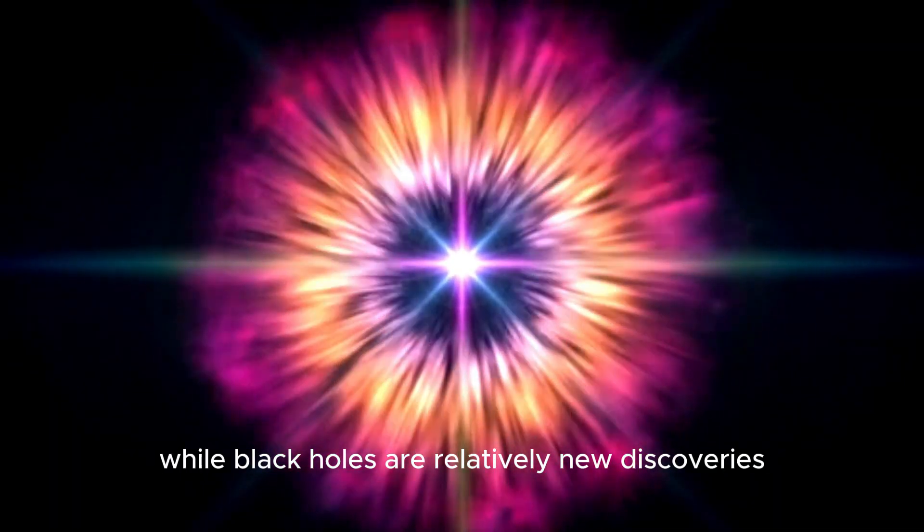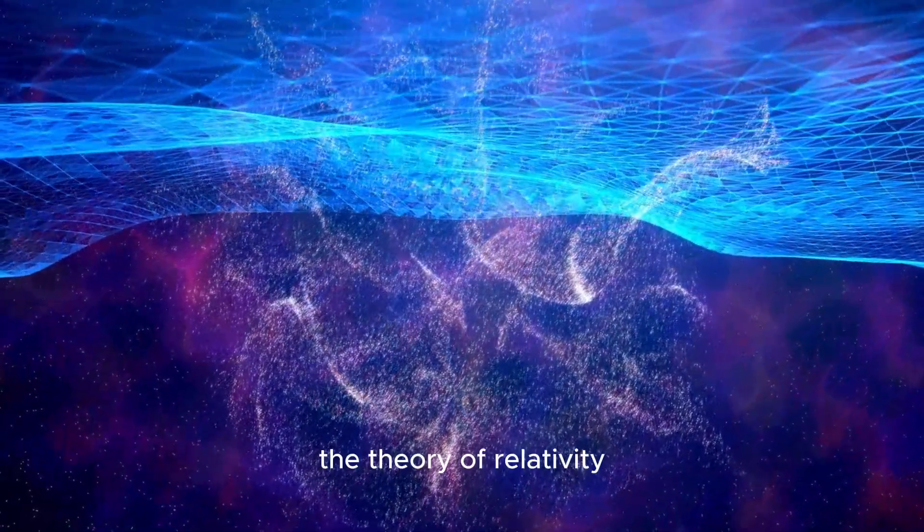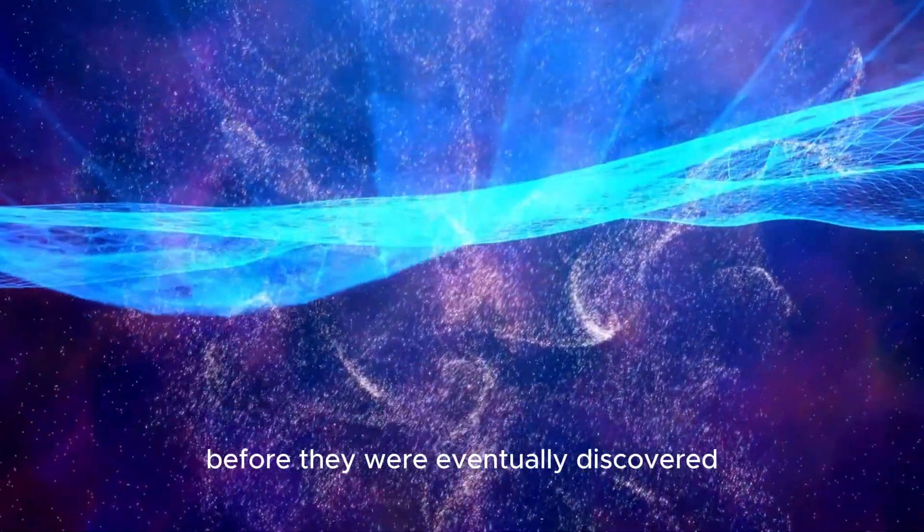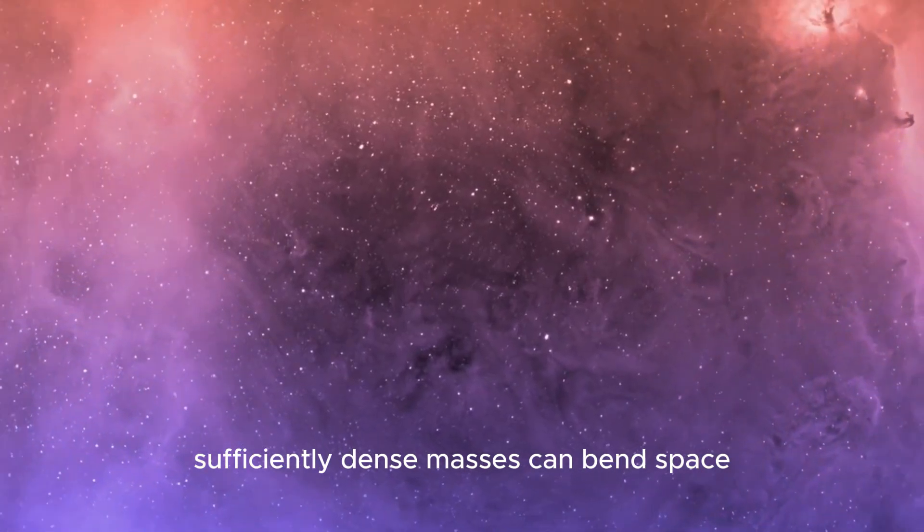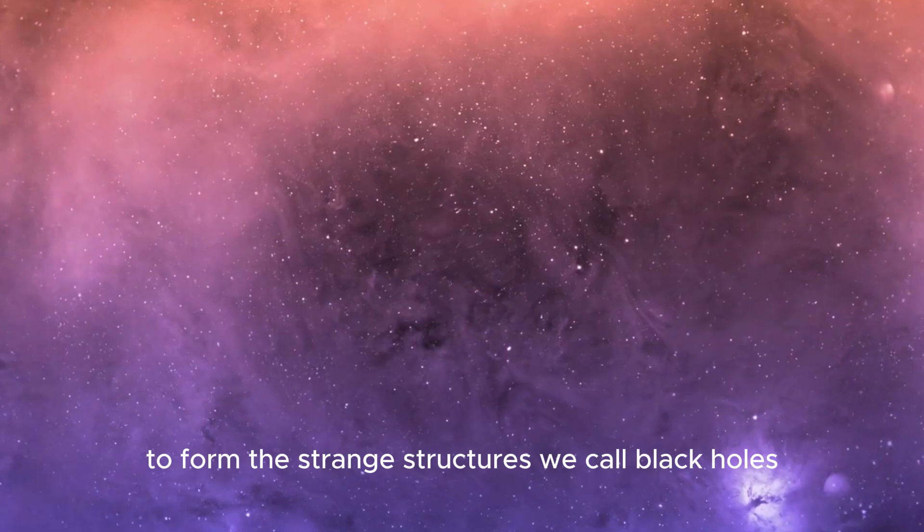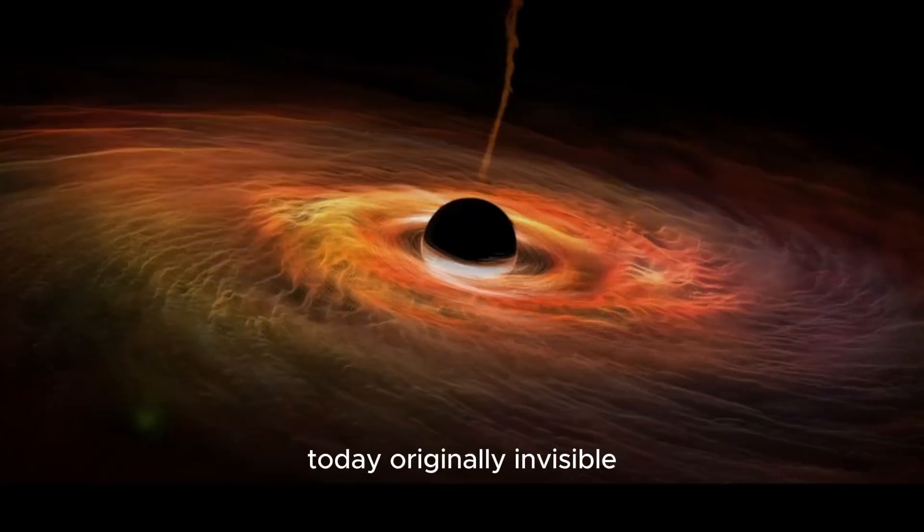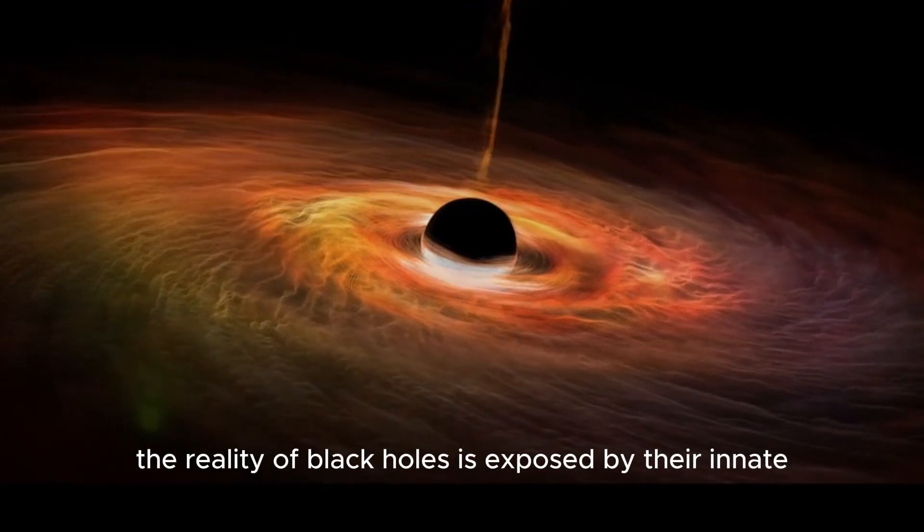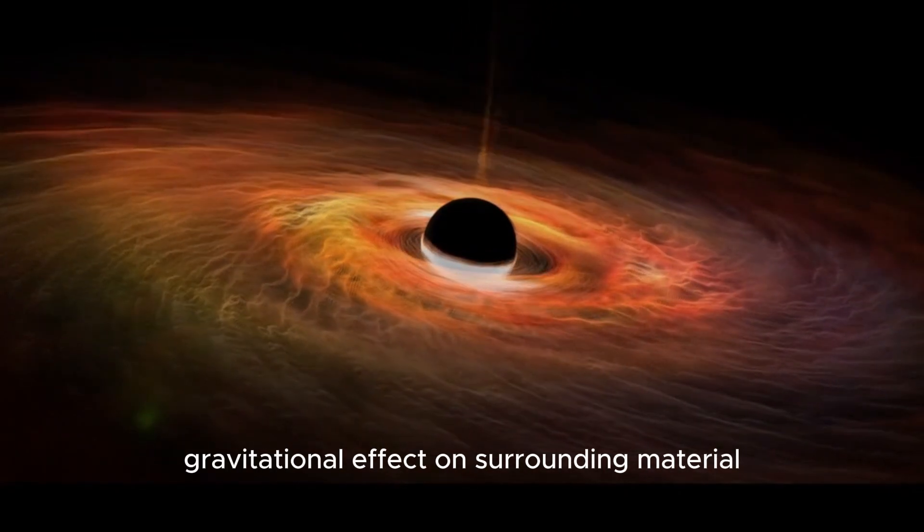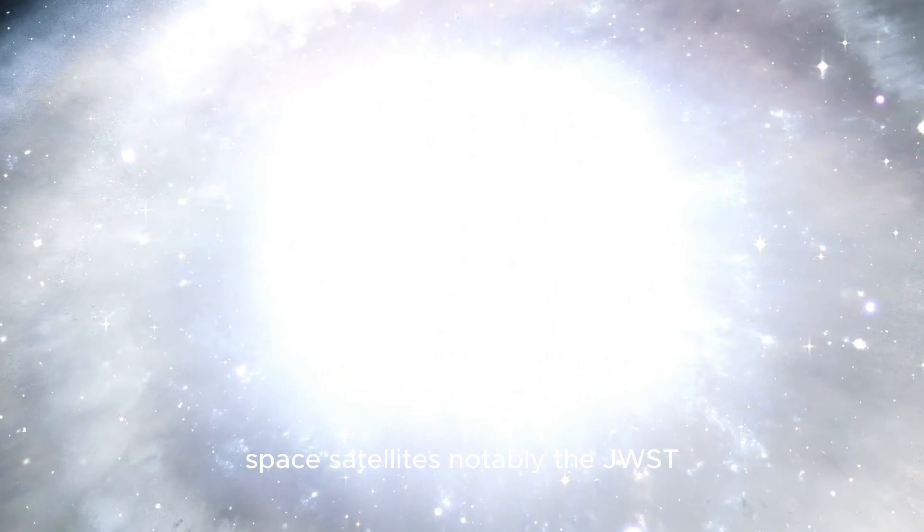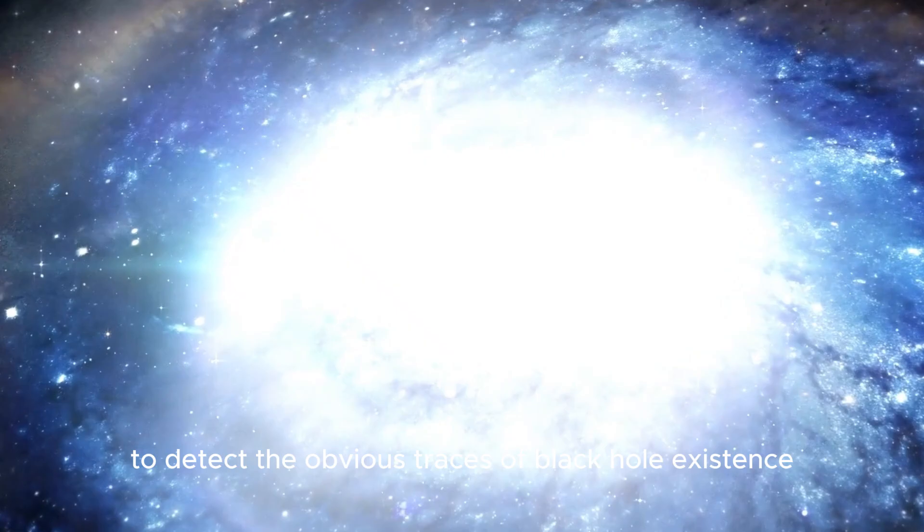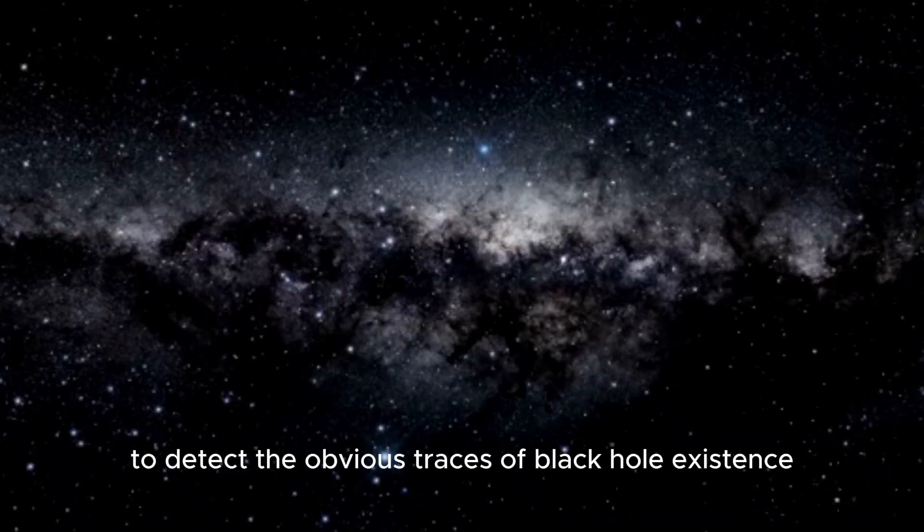While black holes are relatively new discoveries, the theory of relativity had hinted about their existence before they were eventually discovered. The theory suggests that sufficiently dense masses can bend spacetime to form the strange structures we call black holes today. Originally invisible, the reality of black holes is exposed by their innate gravitational effect on surrounding material. Space satellites, notably the JWST, employ different kinds of sophisticated instruments to detect the obvious traces of black hole existence.